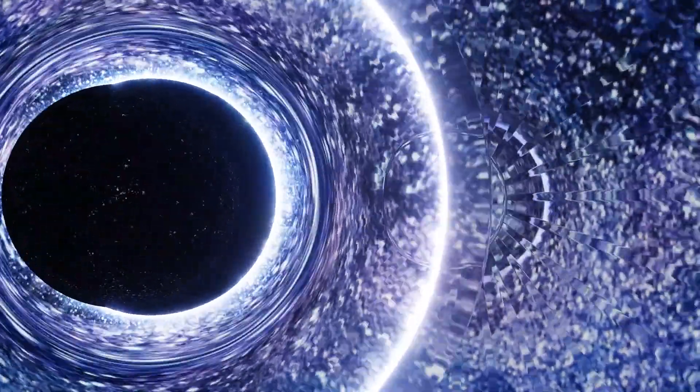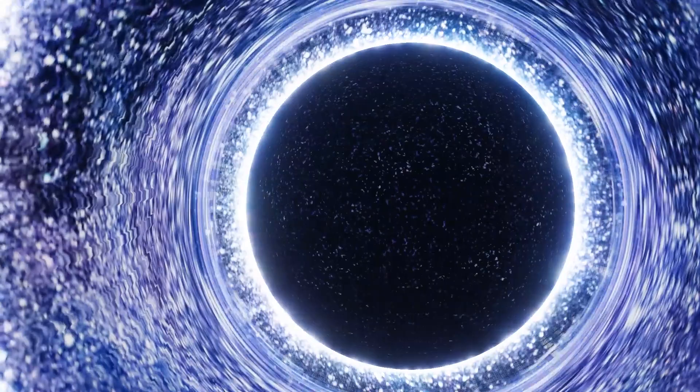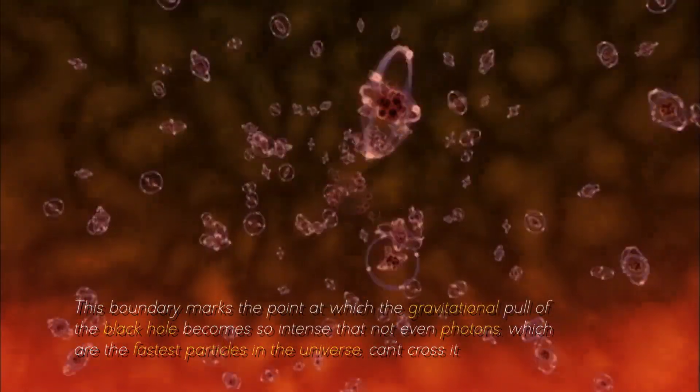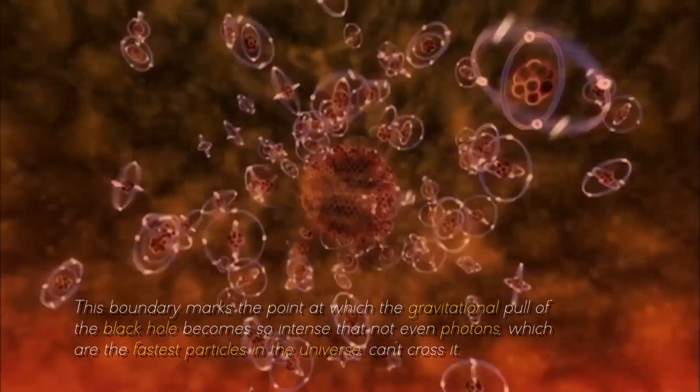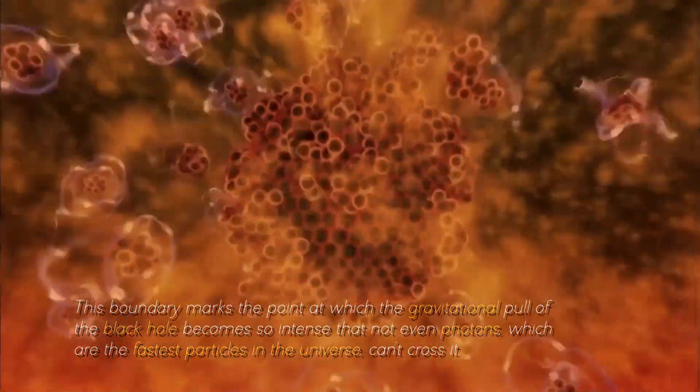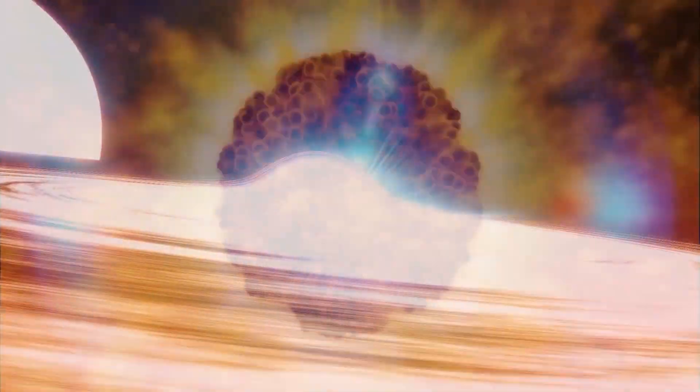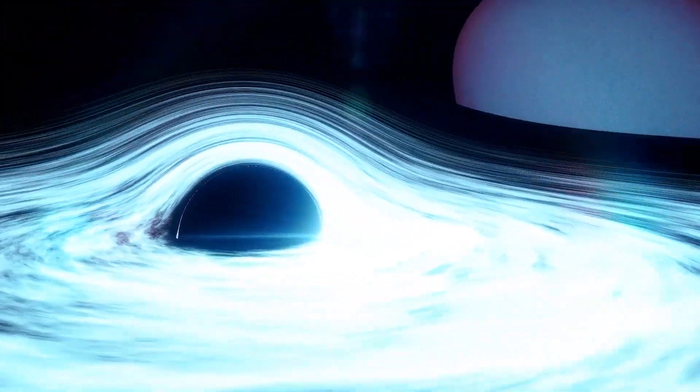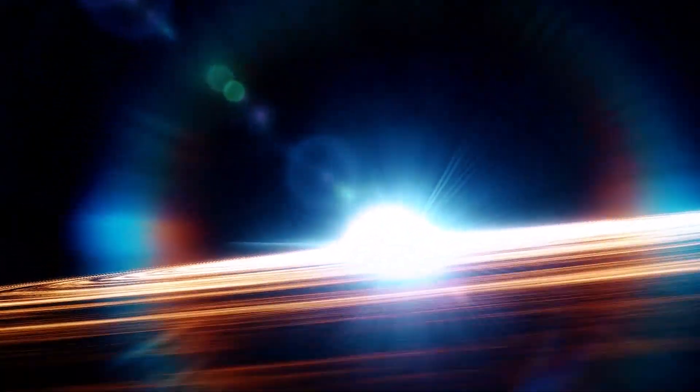A fundamental characteristic of a black hole is its event horizon, an invisible boundary beyond which escape becomes impossible, even for light. This boundary marks the point at which the gravitational pull of the black hole becomes so intense that not even photons, which are the fastest particles in the universe, can cross it. Any object or radiation that crosses the threshold is inexorably pulled toward the singularity at the heart of the black hole, a destination of no return.